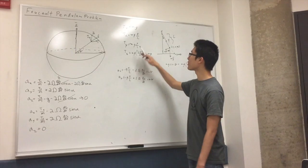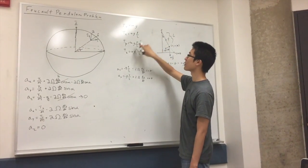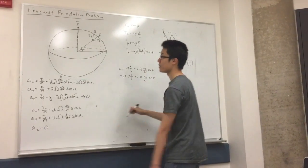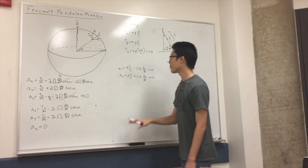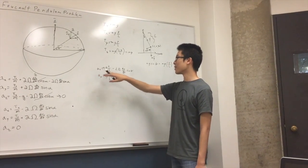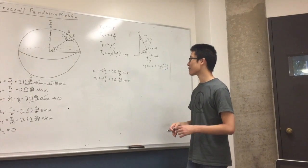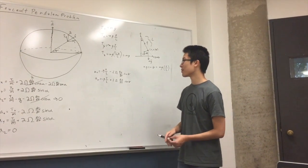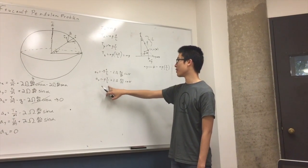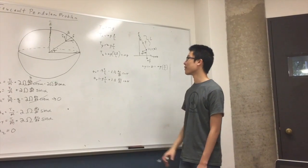After we substitute T_x equals negative mg times x over l, and T_y equals negative mg y over l back into the original equations, we get that a_x equals negative g times x over l minus 2 omega (dy/dt) sine of alpha, and we also have that a_y equals negative g times y over l plus 2 omega (dx/dt) sine of alpha.